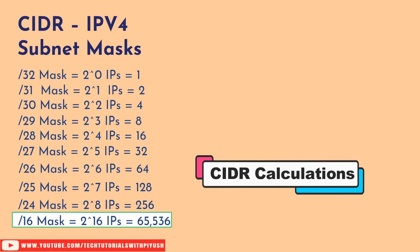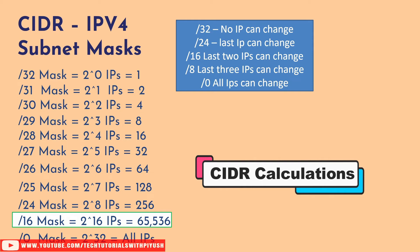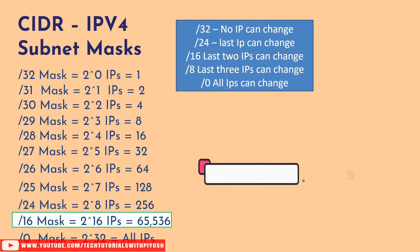The /16 subnet mask is the maximum number of IPs we can have in a VPC — we could add CIDR ranges to the VPC, but /16 is the max one VPC can have. A /0 mask covers all IPs in the network. To summarize: /32 means no IP can change, so only one IP exists in that range. /24 means the last octet can change, ranging from 0 to 255, giving 256 IPs. /16 has 65,536 IPs because the last two octets can change. /8 and /0 follow the same pattern.